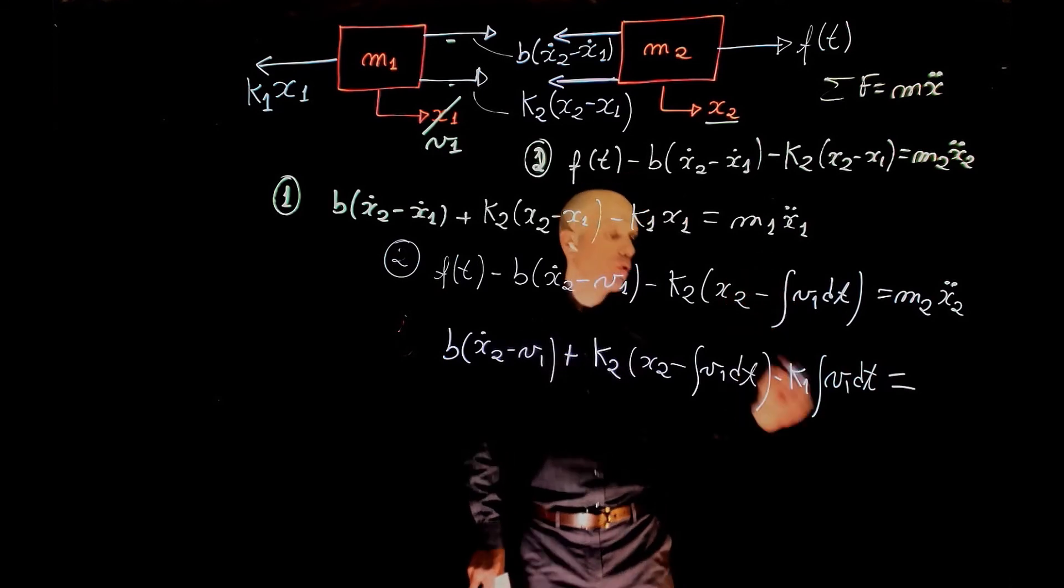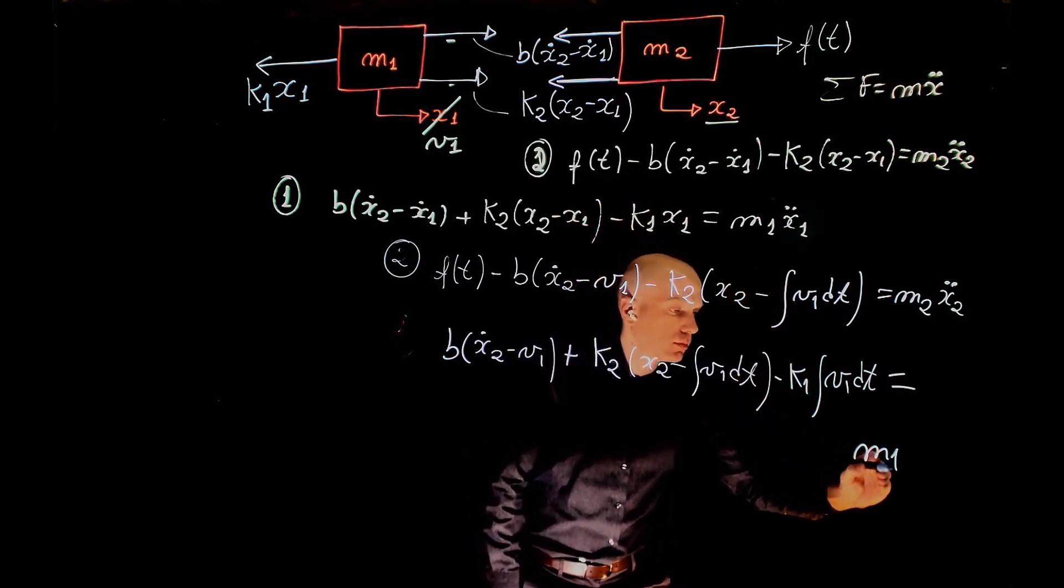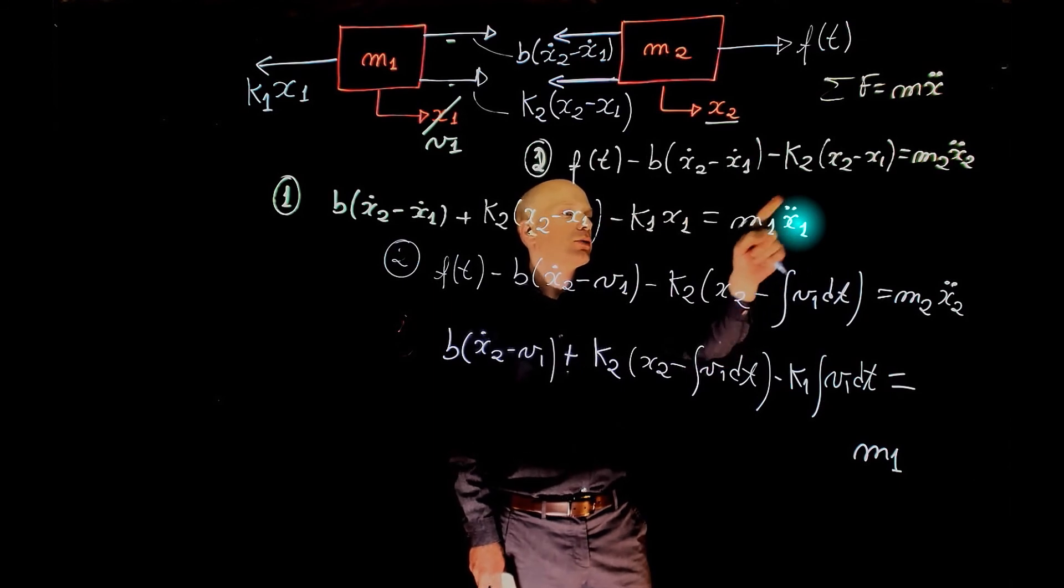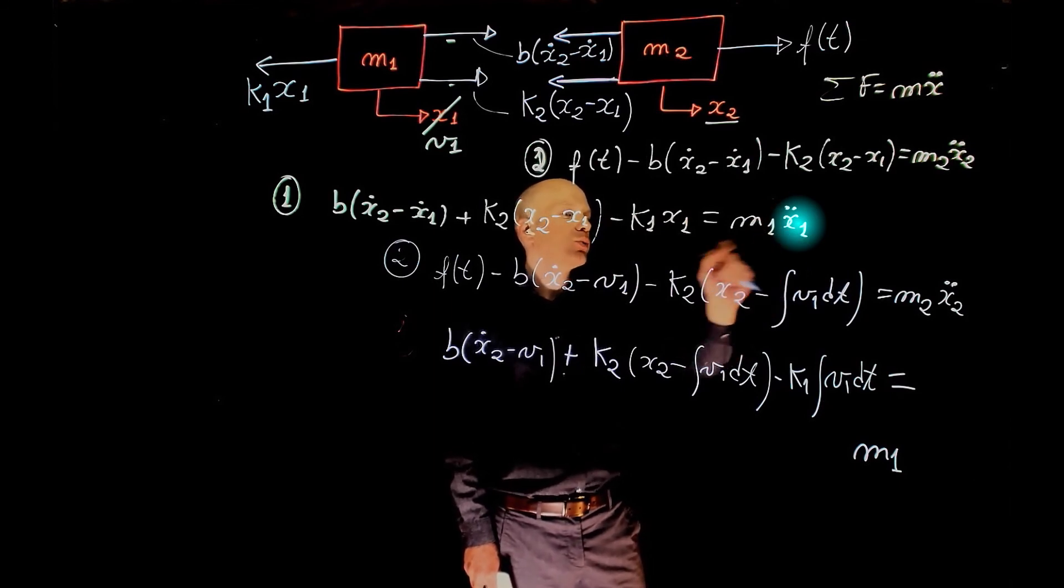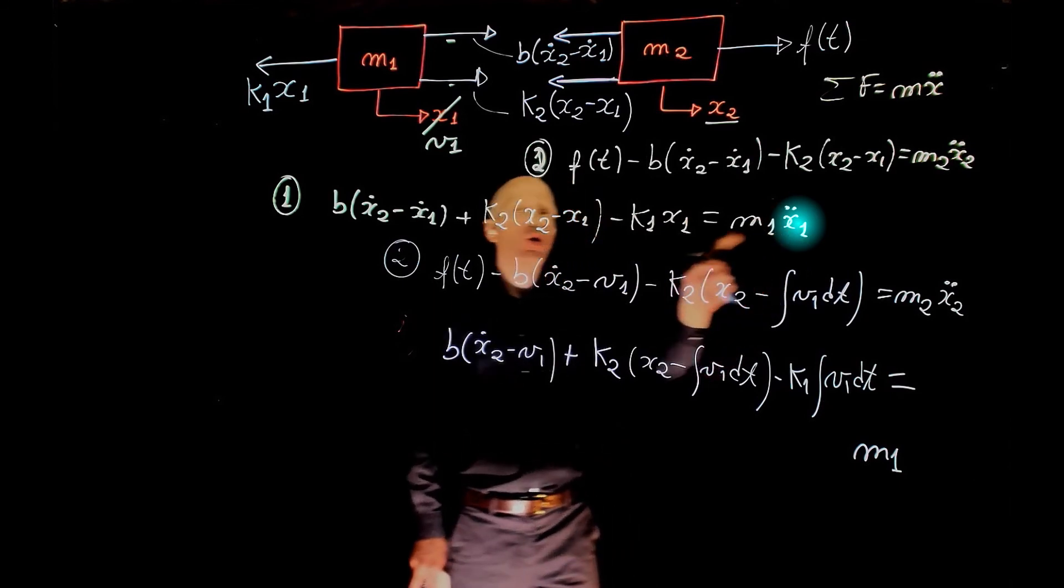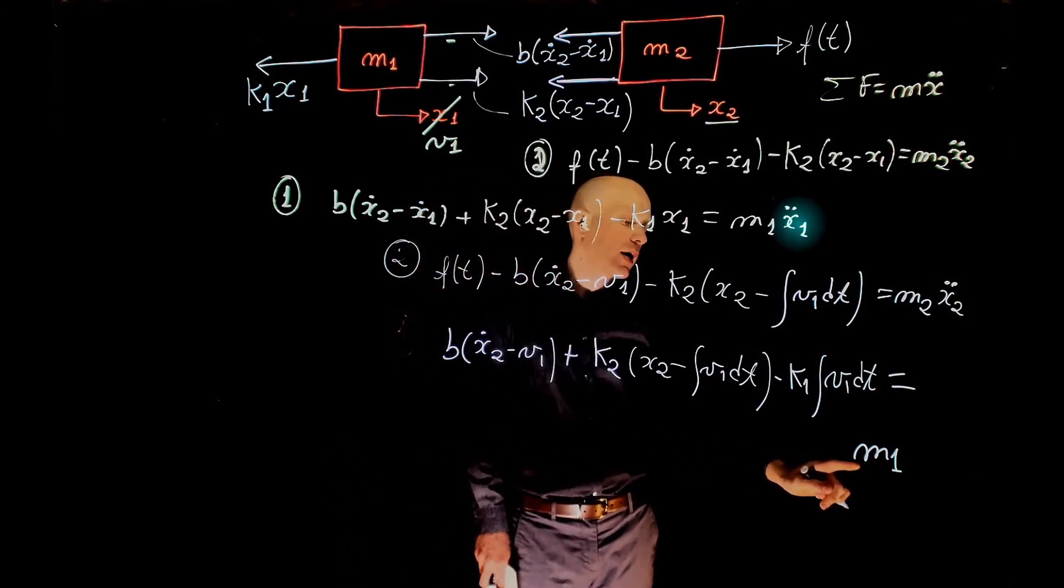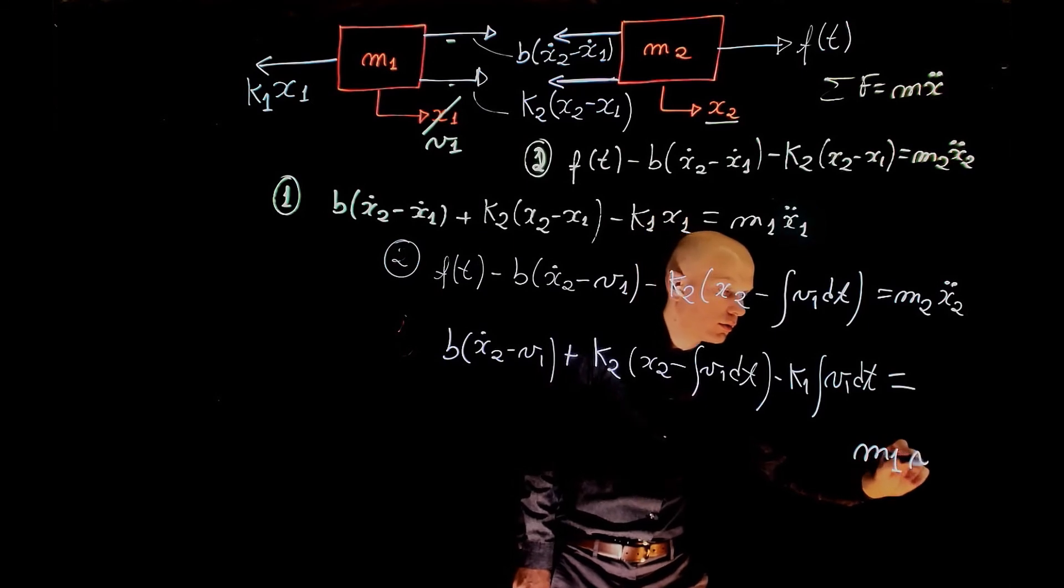Equals M1. This is the acceleration of mass M1, the second derivative of position, or the first derivative of speed. So we can write this as M1 V1 dot.